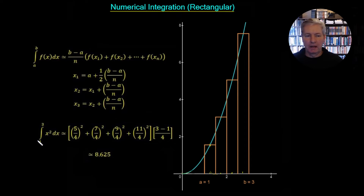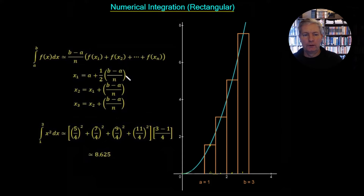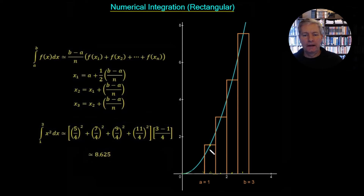Let's look at this particular example: the integral from 1 to 3 of x squared dx. This is going to be approximately equal to dx, which is b minus a upon n — so 3 minus 1 upon 4. We use the centre points: the first is a plus half of (b minus a)/n, which in this instance is 5/4. We take 5/4 and square it to get the height, then multiply by the width to get the area. We do the same for x2 and x3. Working through all of this, we get the final answer 8.625.